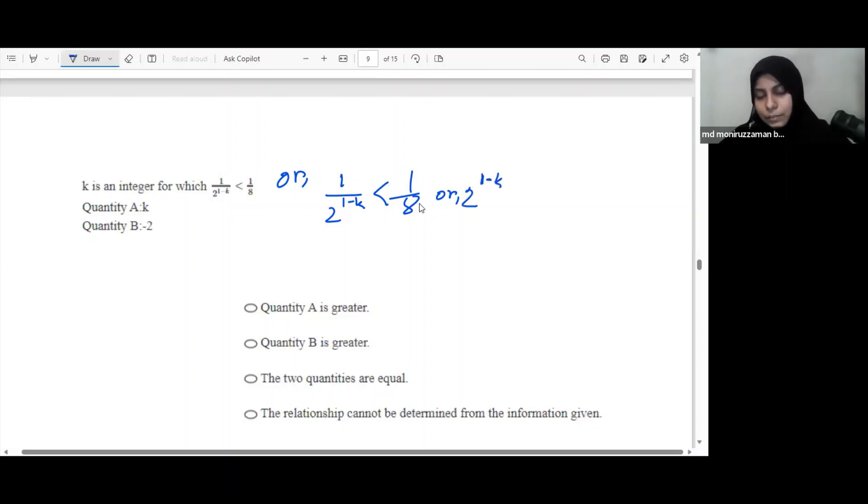1 minus k is equal to 0. So we will simplify this. We will see that the base is the same and the power will be different, so we will divide the base and divide by 2 cube. So we will see that the same base is the same.